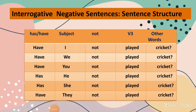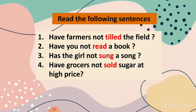The next type of sentence is interrogative negative sentence. The sentence structure is: has/have plus subject plus not plus verb third form plus other words. Examples: Have I not played cricket? Have we not played cricket? Have you not played cricket? Has he or she not played cricket? Have they not played cricket? Applying to our examples: Have farmers not tiled the field? Have you not read a book? Has the girl not sung a song? Have grocers not sold sugar at high price? So using the sentence structure, you can make any type of sentence — affirmative, negative, interrogative, or interrogative negative — in present perfect tense. You just need to remember the structure for each, and it is really very simple.